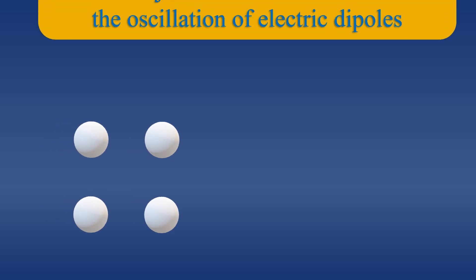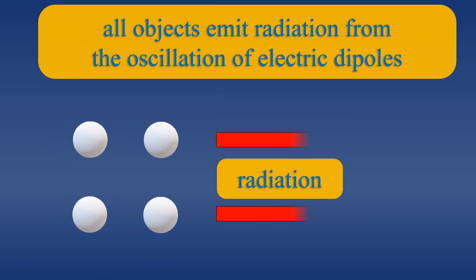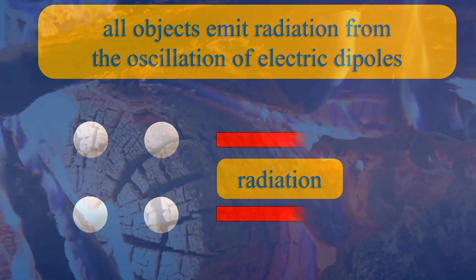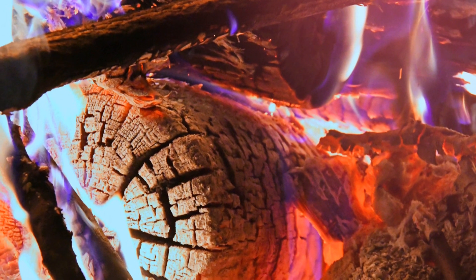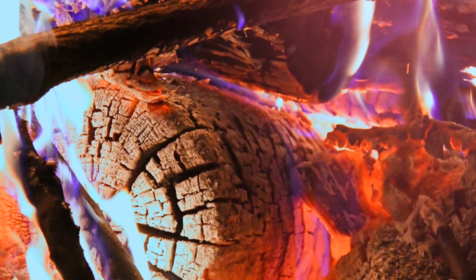It was known at the time that all objects emit radiation from the oscillation of electric dipoles, or charges, of atomic nuclei and their associated electrons. We have all seen an object when heated will warm up and glow red.